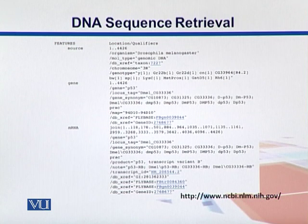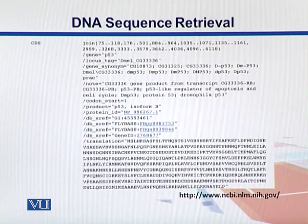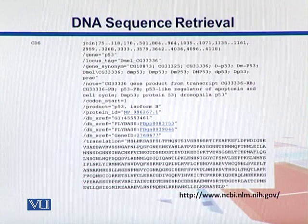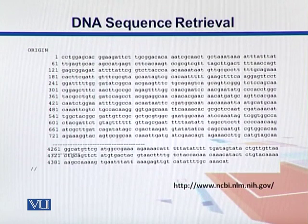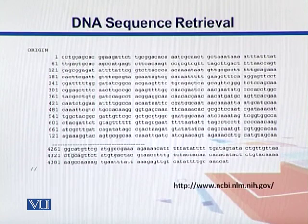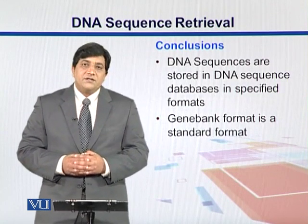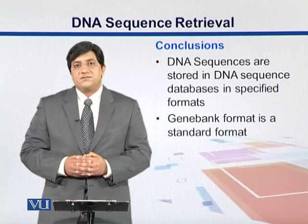Below we see messenger RNA. Since this is a eukaryotic gene, it's coming from the exons — the regions are shown with the word 'join.' Within the messenger RNA we find coding sequences, which are the parts of messenger RNA translated into proteins — further subsets within those mRNA regions. We also see a translated variant where the amino acid sequence is listed under 'translation.' Finally, at the word 'origin' we can see the actual nucleotide sequences starting from position one up to the last nucleotide, ending with a double slash. DNA sequences are stored in databases in specific formats, and GenBank is the standard format.